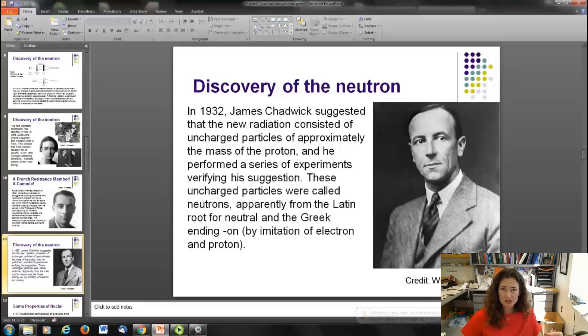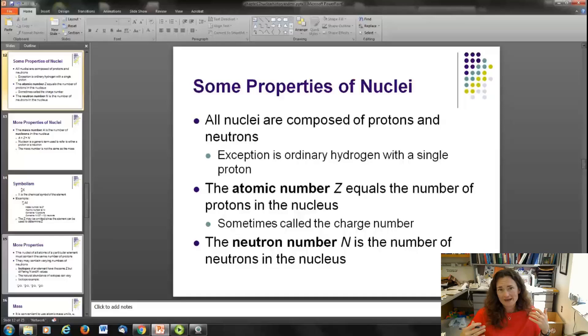Neutrons were really difficult to discover. It took a long time to do it because they are neutrally charged. They're not going to interact with matter by the Coulomb force, and they're tiny. They're the same size as a proton, so it's very difficult for them to be detected.